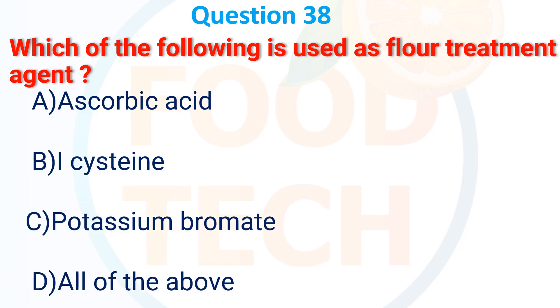Which of the following is used as a flavor treatment agent? A. Ascorbic acid, B. Cysteine, C. Potassium bromate, D. All of the options. The answer is D. All of the options.